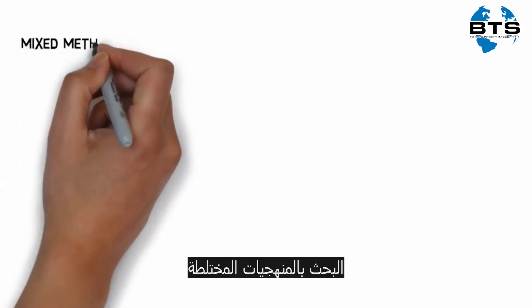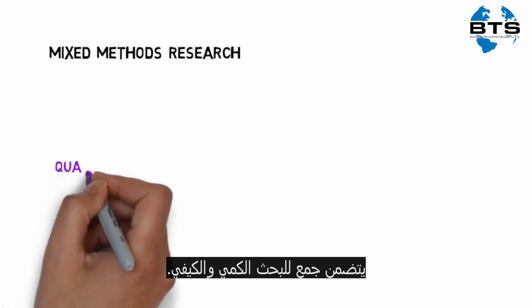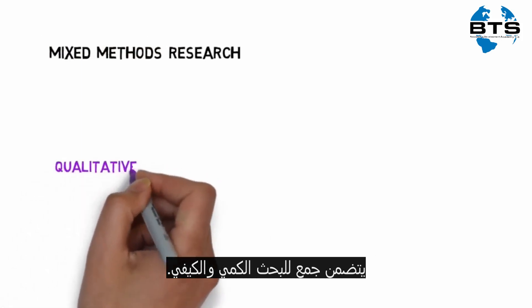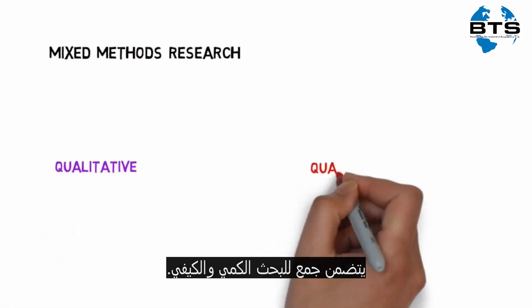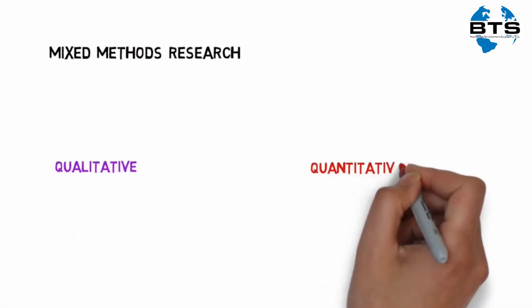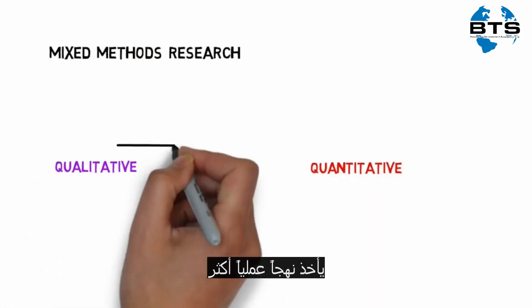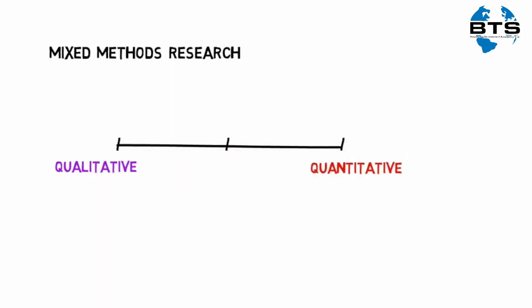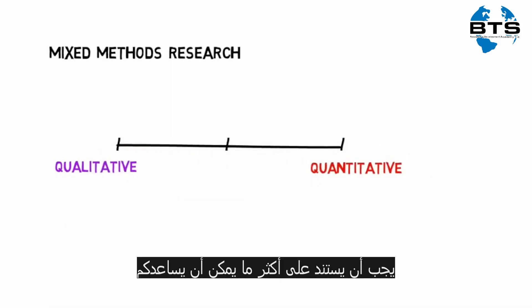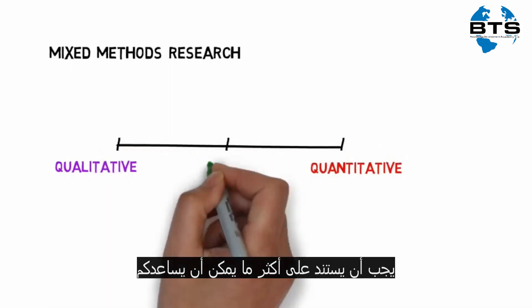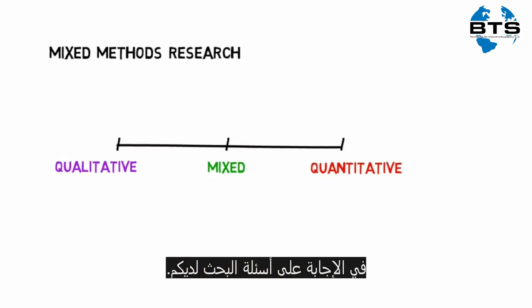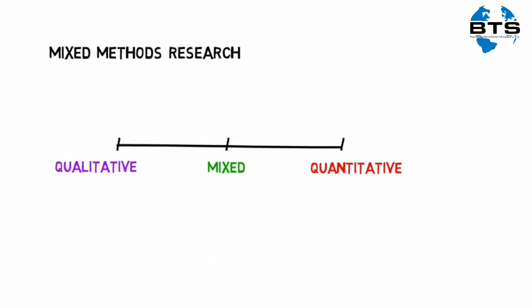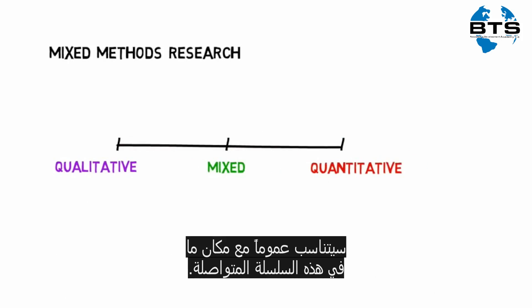Mixed methods research involves combining quantitative and qualitative research. It takes a more pragmatic approach whereby the type of research used should be based on what will best help you answer your research question. The research required will generally fit somewhere on this continuum.